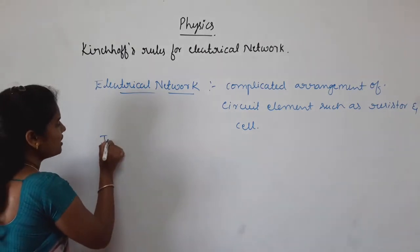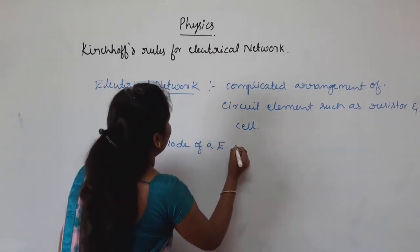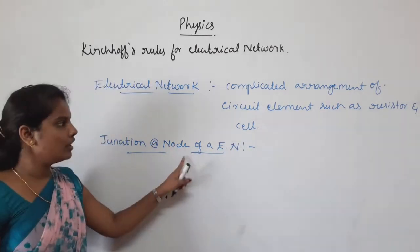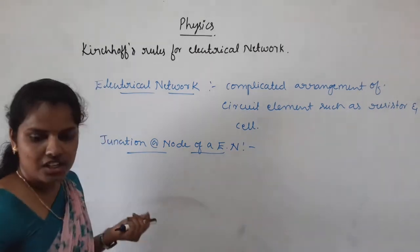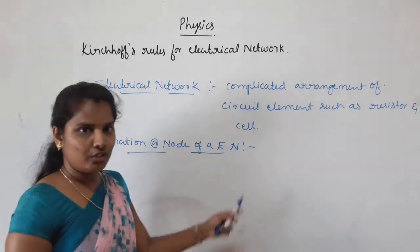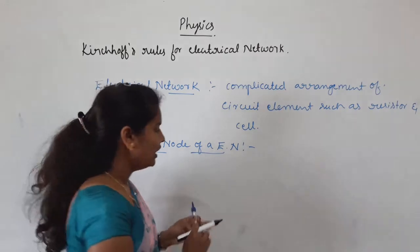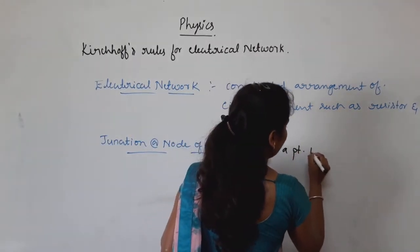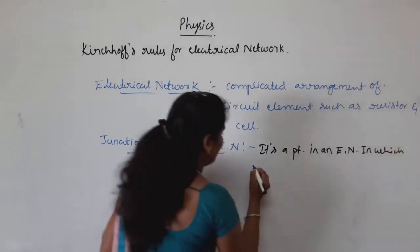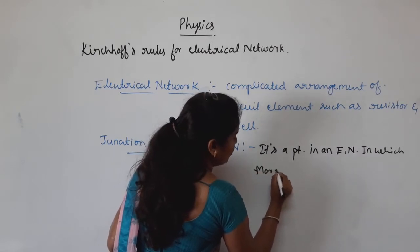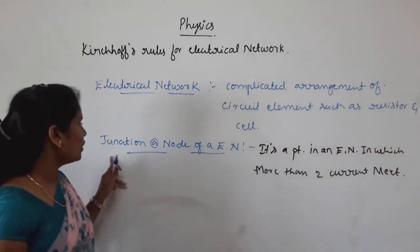The next term is junction or node of an electrical network. A junction is a point in an electrical network in which more than two currents meet. This point is called a node or a junction.